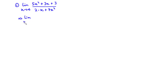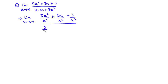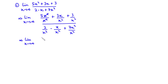We have the limit at infinity of the function: (5x²/x²) + (3x/x²) + (3/x²), all divided by (2/x²) − (x/x²) + (7x²/x²). Let's simplify this. x² cancels x², leaving 5; x cancels one of the x's giving 3/x; and we have 3/x².